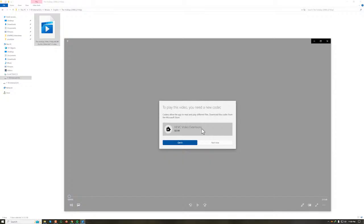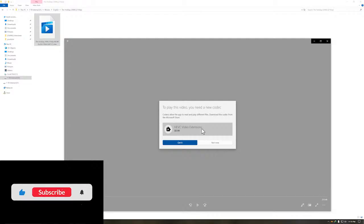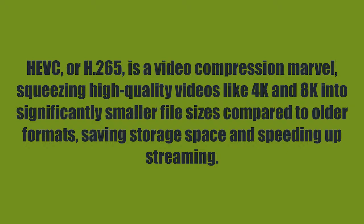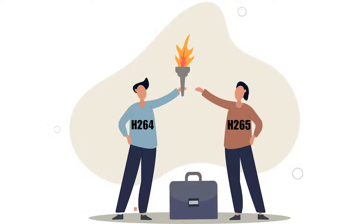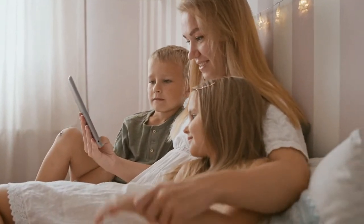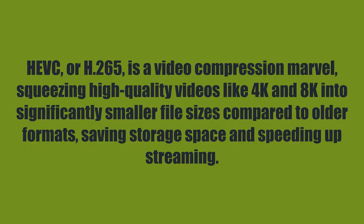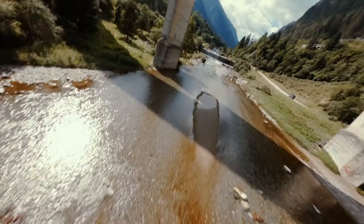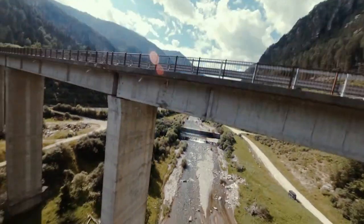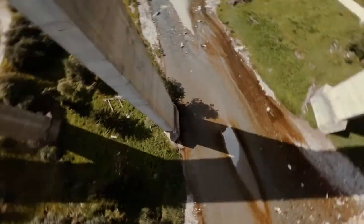Before diving into that, let's understand what exactly is this HEVC video format. HEVC, which stands for High Efficiency Video Coding, is also known as H.265. This is a video codec which is the successor to the industry standard H.264, or AVC (Advanced Video Coding). Almost all the MP4 files we watch these days are encoded with AVC. That was working fine, but the problem arose when we wanted to stream high quality video like 4K or 8K on the internet or on lower-end devices.